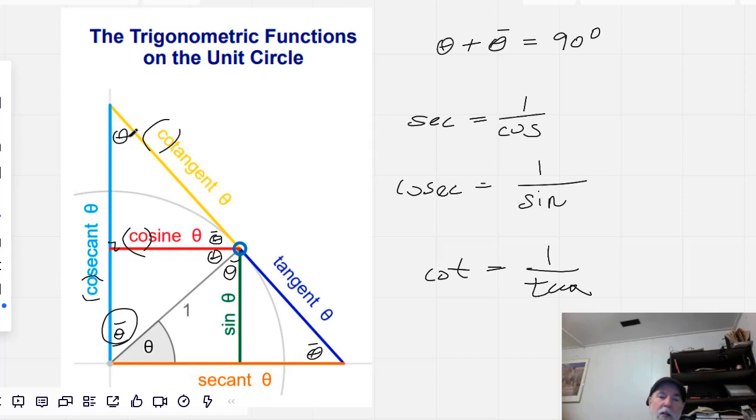Or we could just see it as being the reciprocal of the tangent of theta. So, here's theta, which would be opposite over adjacent. So, adjacent over opposite is the cotangent.